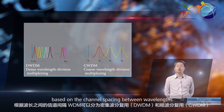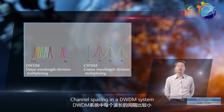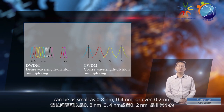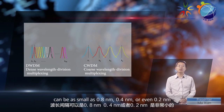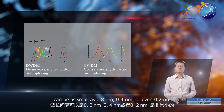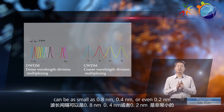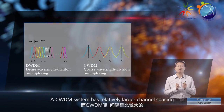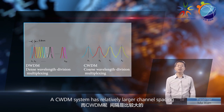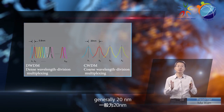This categorization is based on the channel spacing between wavelengths. Channel spacing in a DWDM system can be as small as 0.8 nanometers, 0.4 nanometers, or even 0.2 nanometers. A CWDM system has relatively larger channel spacing, generally 20 nanometers.